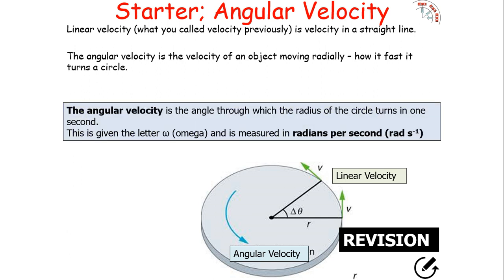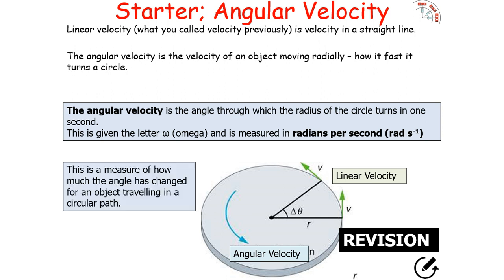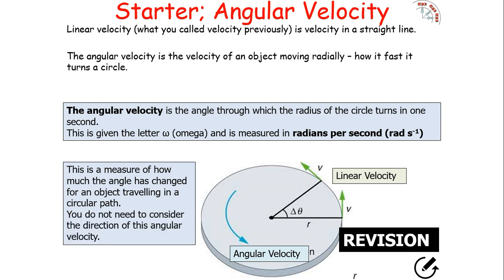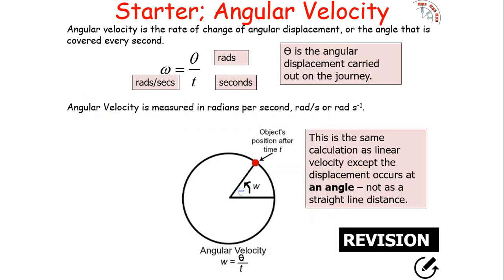The angular velocity, given the symbol omega (which looks like a W), is measured in radians per second. It is the change in angle through which the object turns in a particular time — a measure of how much the angle has changed for an object travelling in a circular path. You don't need to consider direction; angular velocity is the rate of change of angular displacement, calculated as the change in angular displacement divided by time.